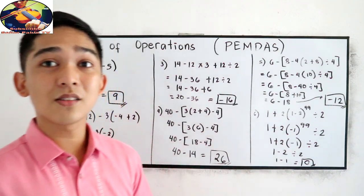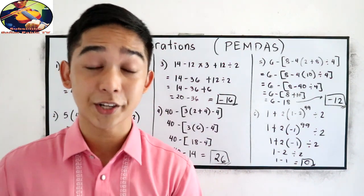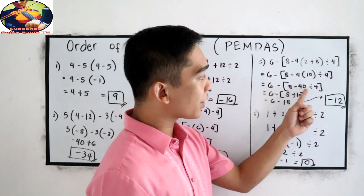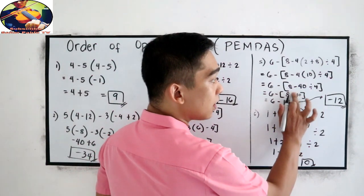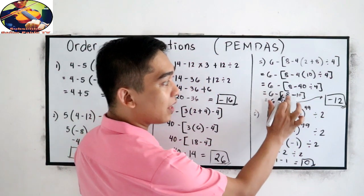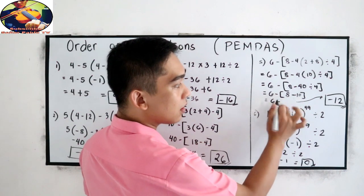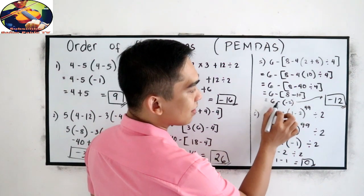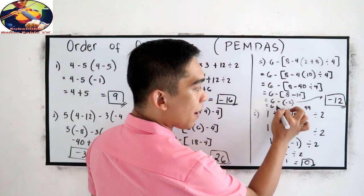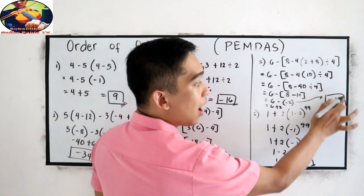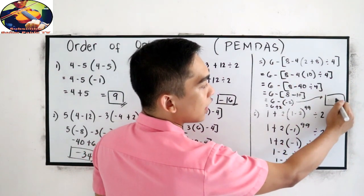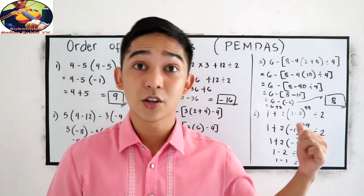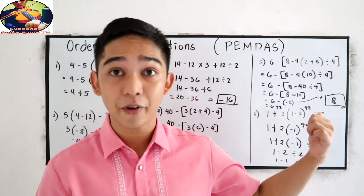There is a correction for number 5. Negative 40 divided by 4 should be negative 10. Then 8 minus 10 is negative 2. And 6 minus negative 2 is 6 plus 2, so the final answer for number 5 must be 8. I'm sorry for that — please double check: number 5's final answer is 8.